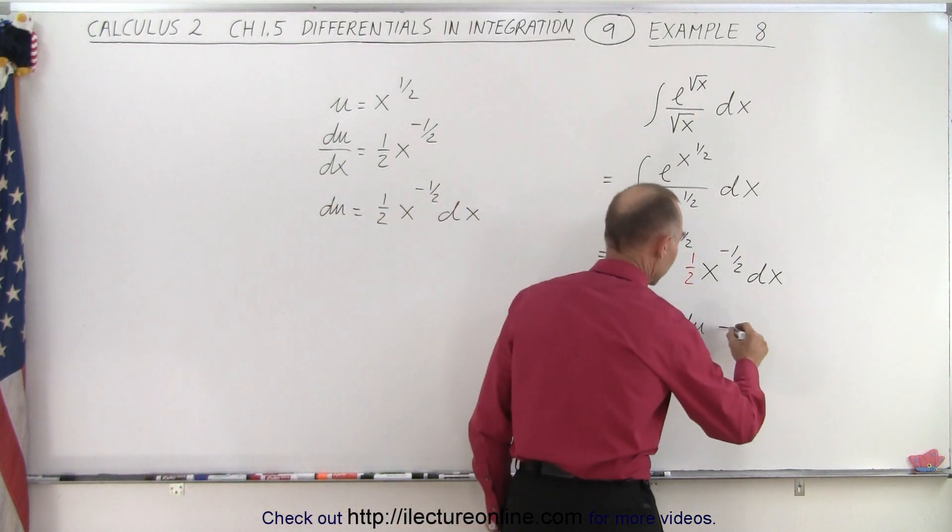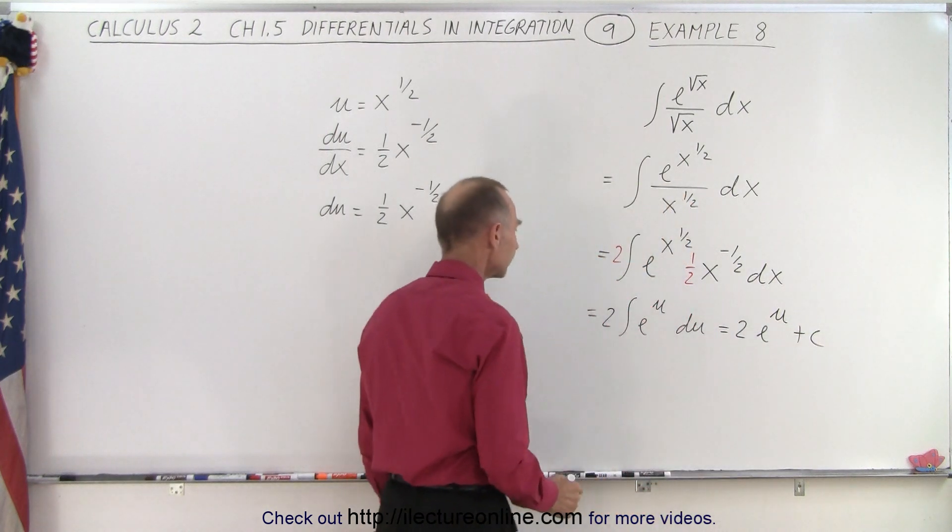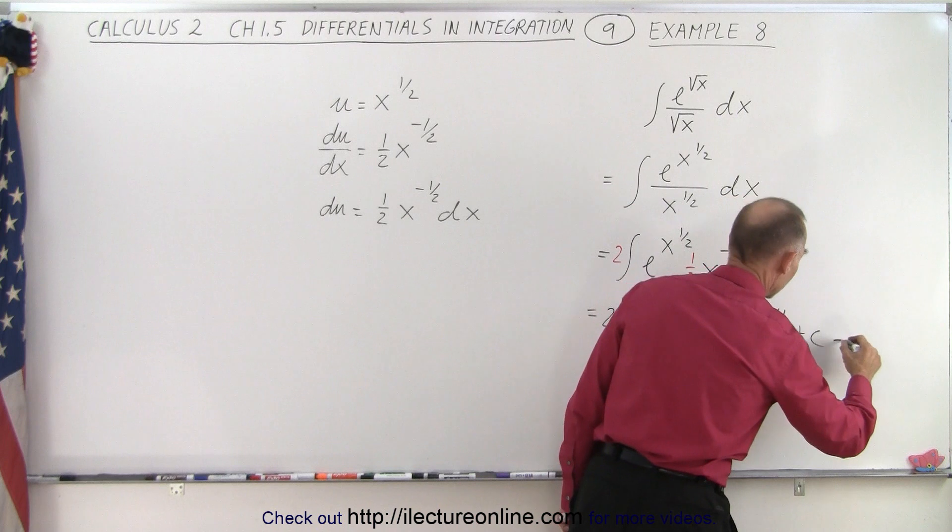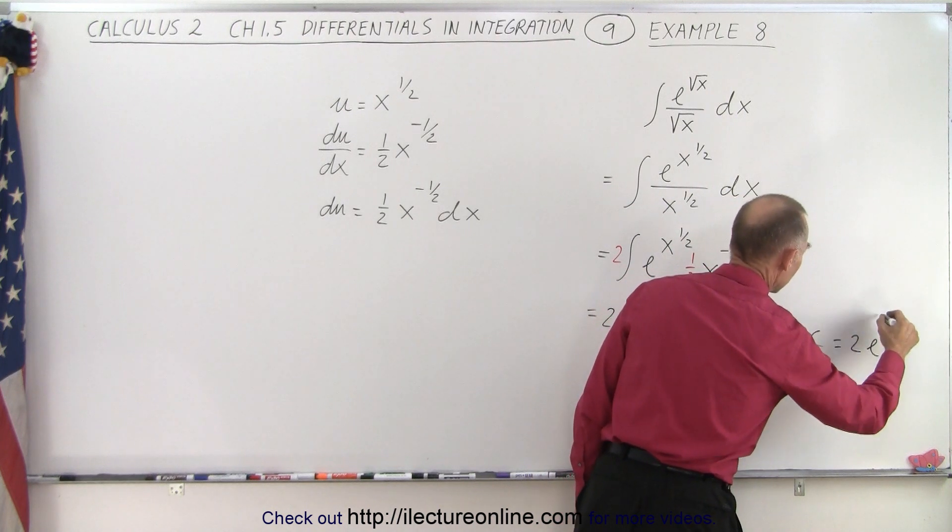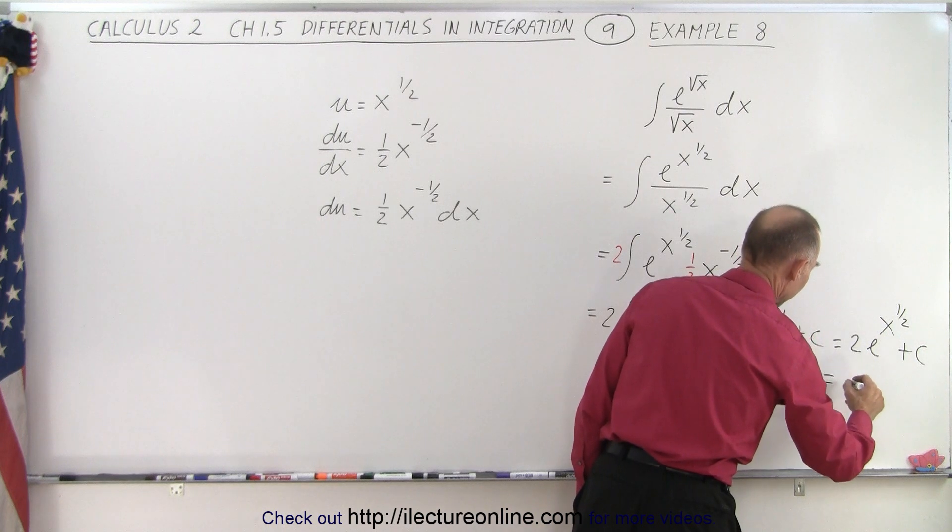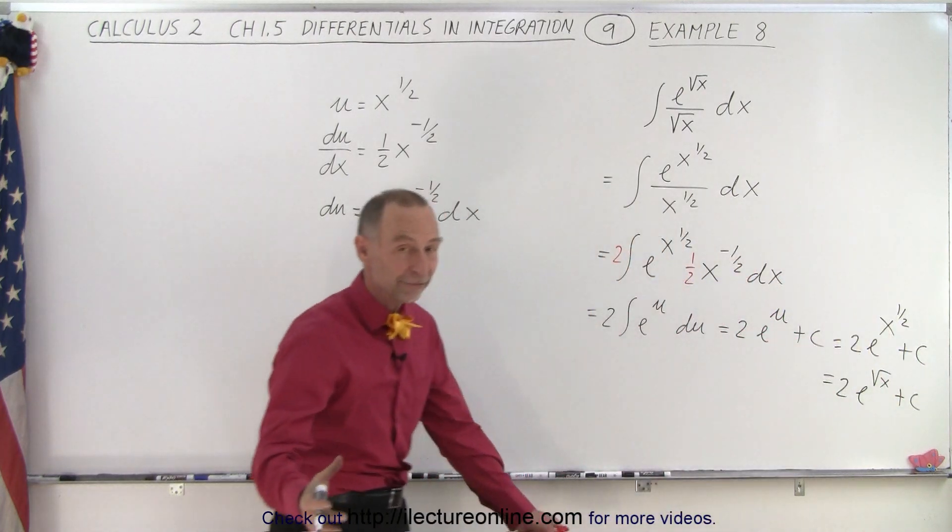And then we can simply replace the u by x to the 1/2. So this would be equal to 2e to the x to the 1/2 plus a constant of integration. Or if you like, you can write this as 2e to the square root of x plus c, however you want to leave the final answer.